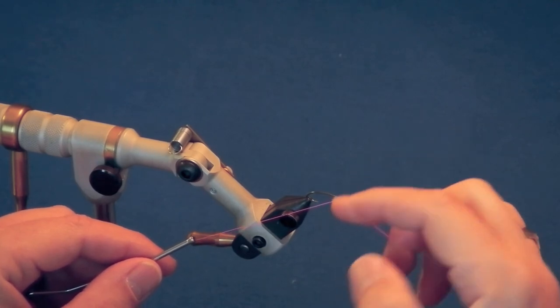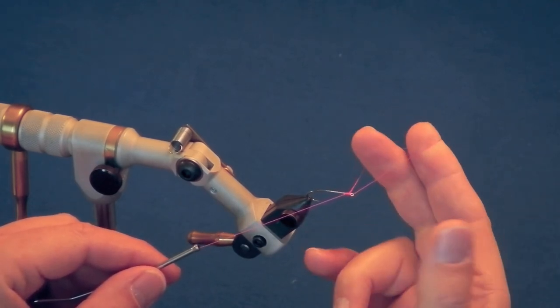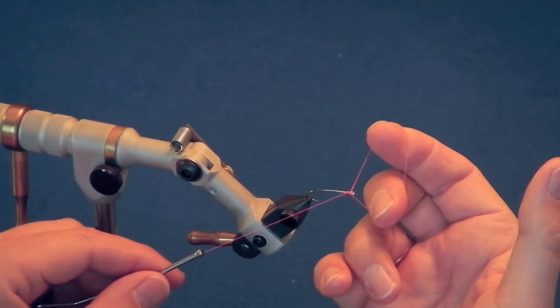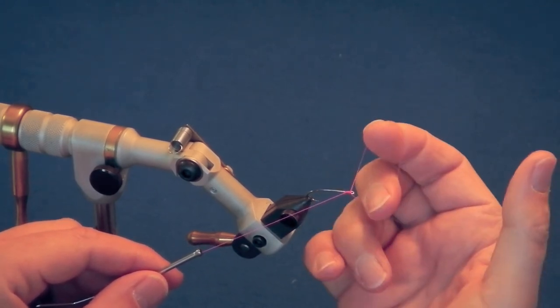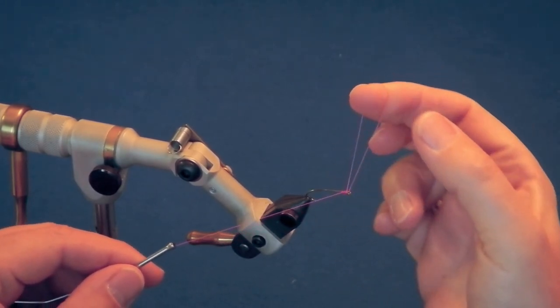Repeat the whipping motion four more times to make a five-turn whip finish. Be sure to make each successive wrap closer to the hook eye. Your final wrap should be up against the hook eye.